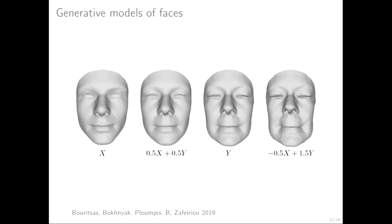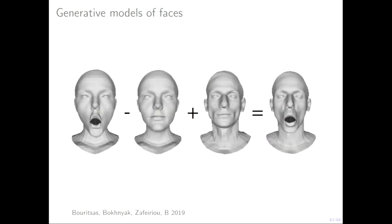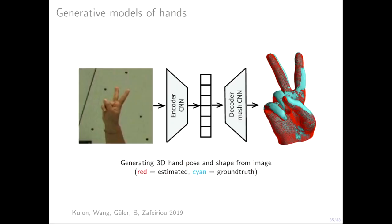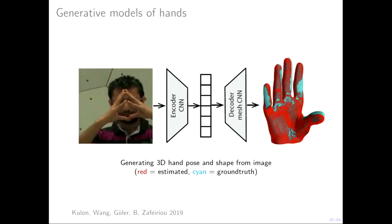Generative models for faces were done with my collaborator Stefanos. You can do arithmetic in the latent space of the generative model. One application we are exploring is predicting facial structure from genetic information — face from DNA reconstruction, done with Peter Claes from KU Leuven. We can also do it for hands — reconstructing hands from 2D images in another work with Stefanos, using a typical encoder-decoder architecture. The reconstruction of the hand is pretty amazing, even with difficult poses and occlusions.